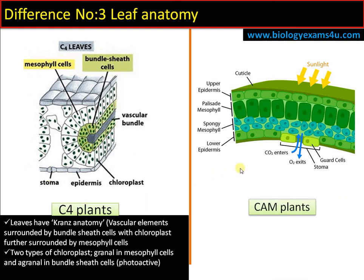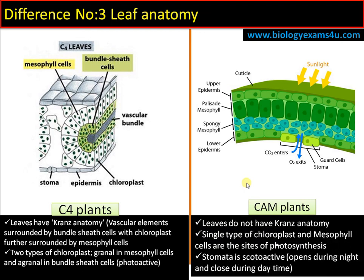In CAM plants, the anatomy is almost similar to that of C3 plants — there is no Kranz anatomy. Both initial carbon dioxide fixation and Calvin cycle occur in mesophyll cells. The stomata is photoactive: it opens during nighttime to receive carbon dioxide and closes during daytime to avoid transpiration.